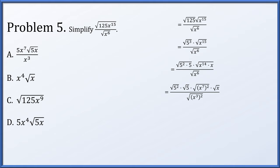The square root of 5 squared times 5 gets broken up as the square root of 5 squared times the square root of 5. Similarly, the square root of x to the 14th times x is broken into two terms, and x to the 14th is rewritten as x to the 7th squared. In the denominator, x to the 6th is rewritten as x cubed squared. The square root of something squared is its absolute value: the square root of 5 squared is 5, the square root of x to the 7th squared is the absolute value of x to the 7th, and the denominator gives the absolute value of x cubed.